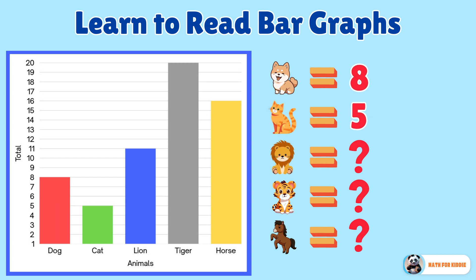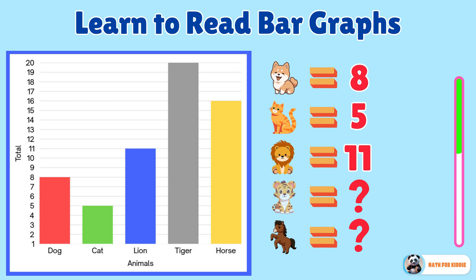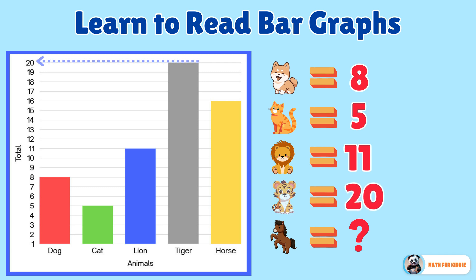Next question. How many lions are there? It is 11. You are doing great. How about for tigers? Can you tell me the number? It is 20. That's correct, well done.